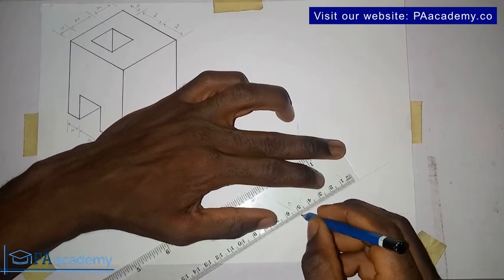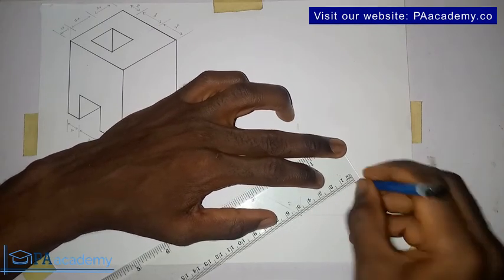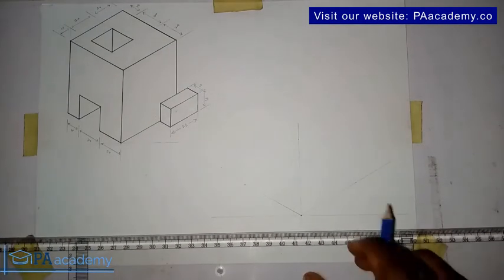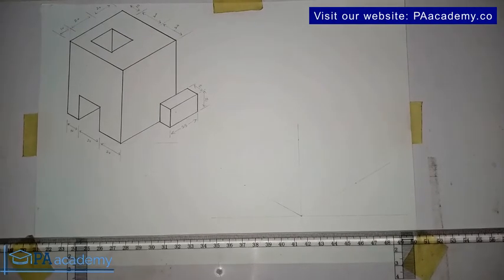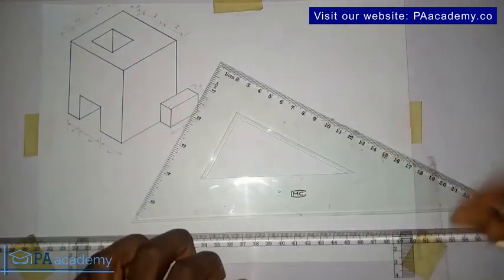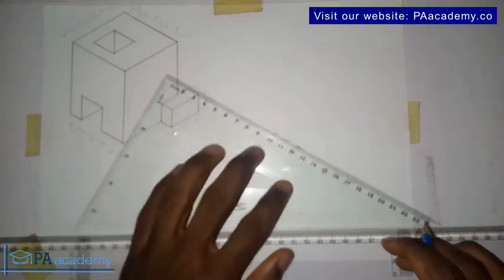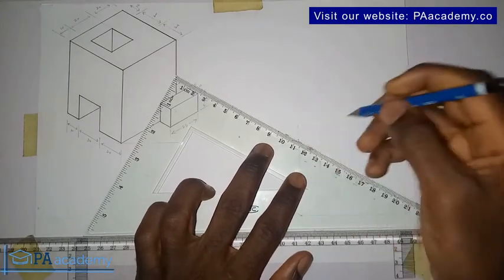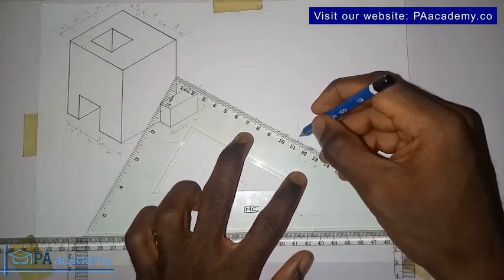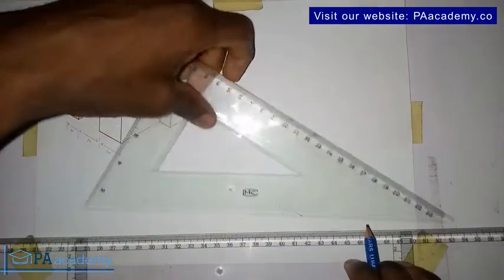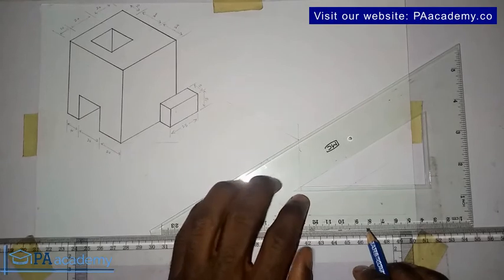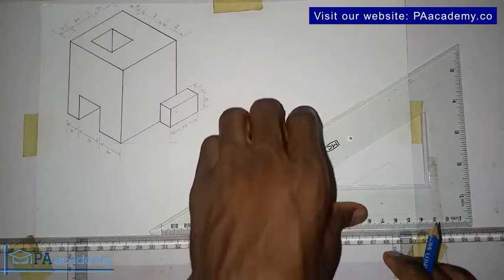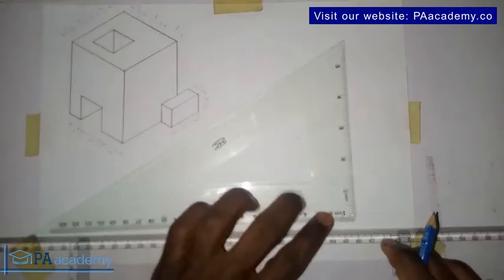We have this side to be 5. We also have here to be 5. Alright so let's continue. I bring back the set square. From the top, here I mark it 6 centimeters, draw a line like this.